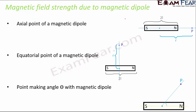Now let's talk about magnetic field strength due to a magnetic dipole. For an axial point — a point which lies on the axis of the magnetic dipole — point P is axial. The magnetic field at an axial point is equal to mu naught by 4 pi into 2M divided by r cube, where capital M is the magnetic moment and r is the distance of point P from the center of the magnet.